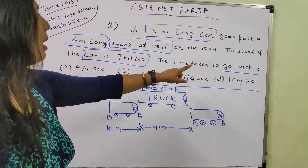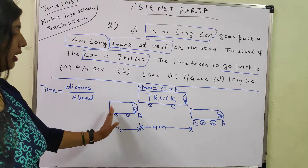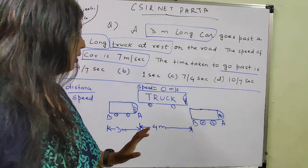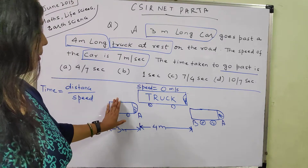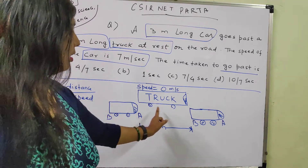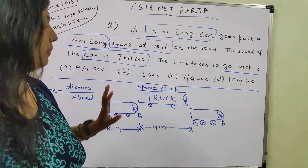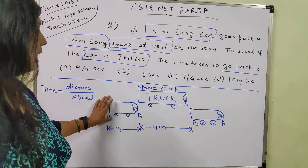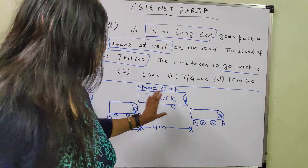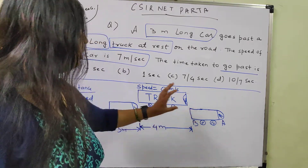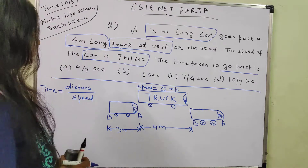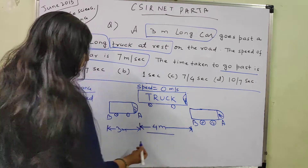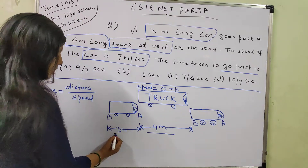Time taken to go past means a car is just behind the truck and will immediately cross the truck and reach the other side. So, how much time is taken by the car to cross the truck, where the truck is fixed? The question asks how much time is required by the moving car to just cross the truck completely.